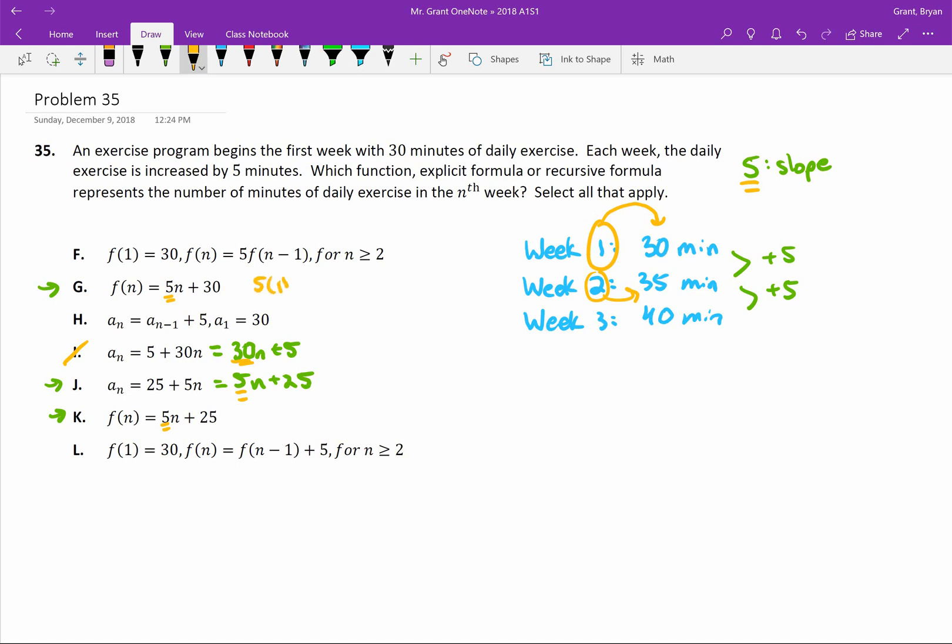If I plug in 1, that becomes 5 + 30, we get 35. That's not good, because we know in this problem when we plug in 1, we better get 30. In the first week, we did 30 minutes. Here, this is saying in the first week we did 35. That doesn't match our information. So G is out as well.